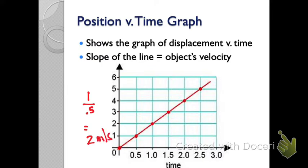2 meters per second, right? Or you go up 2 over 1 second. 1 second is 2 slots there. We need to know how to calculate slope.